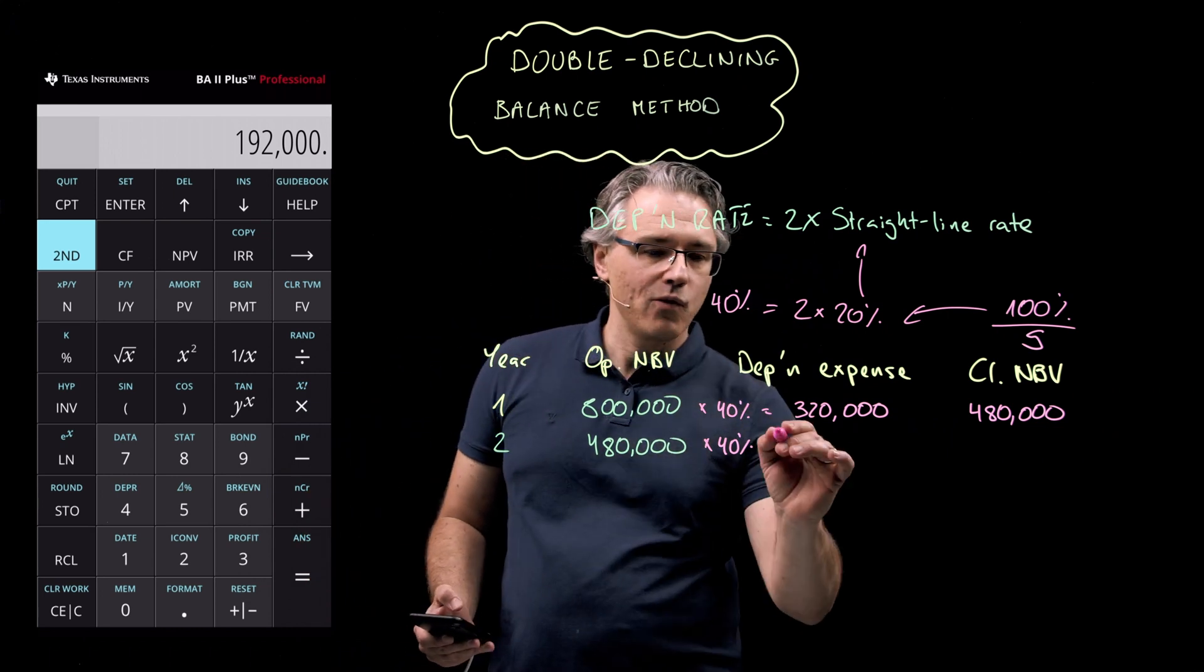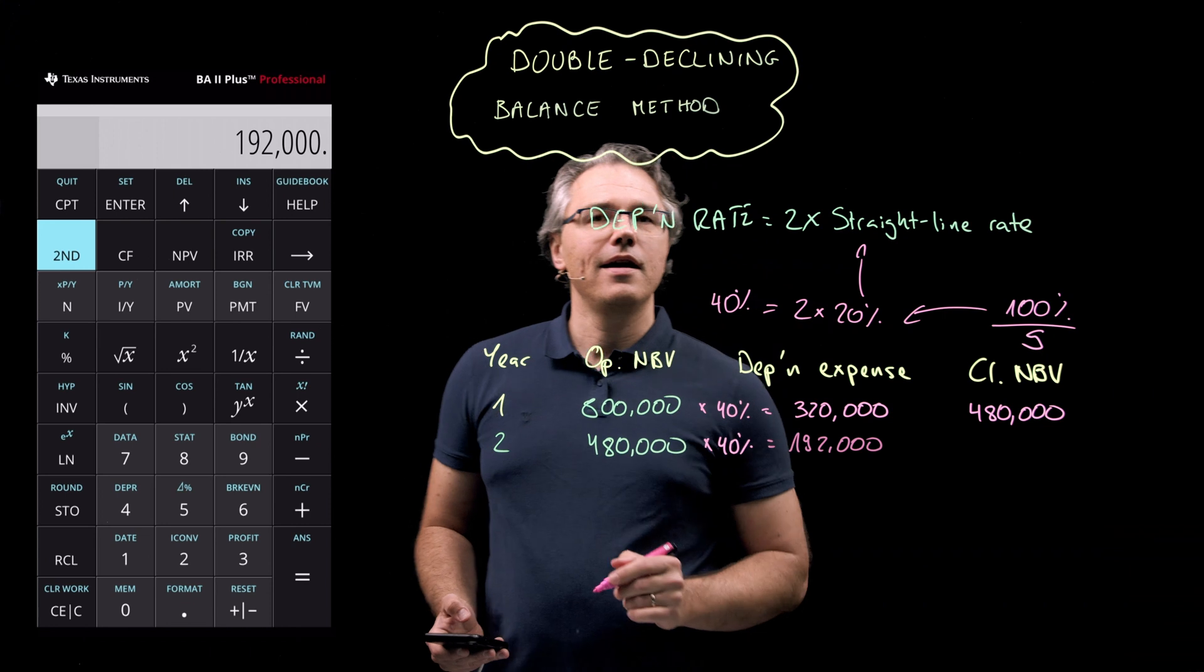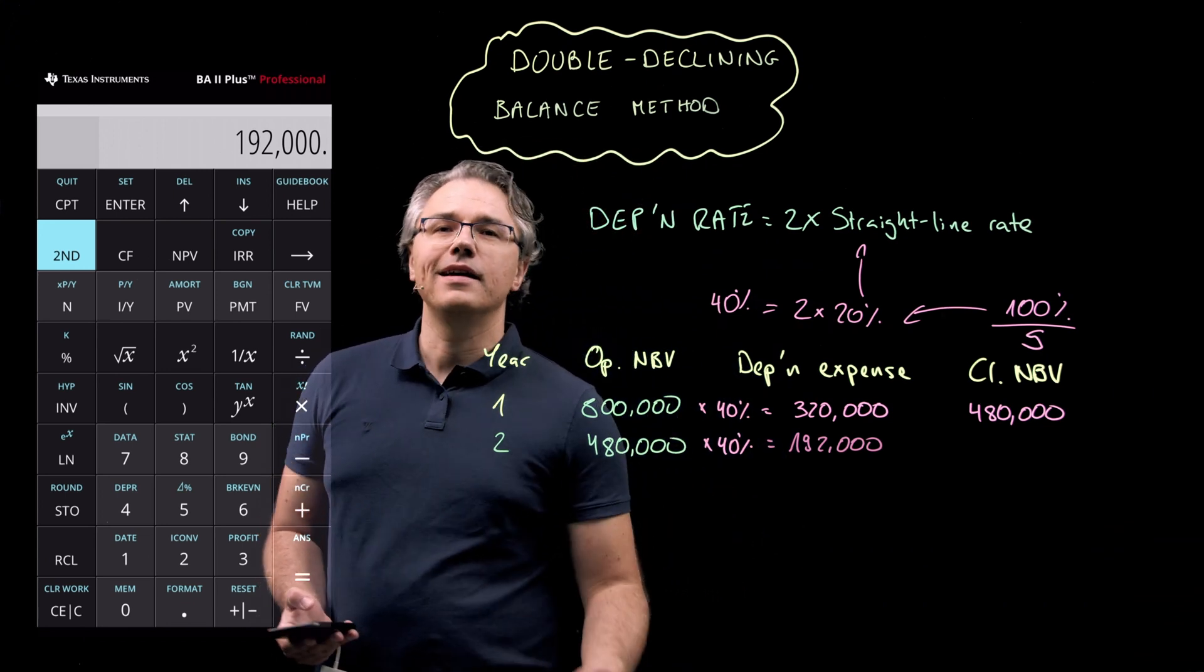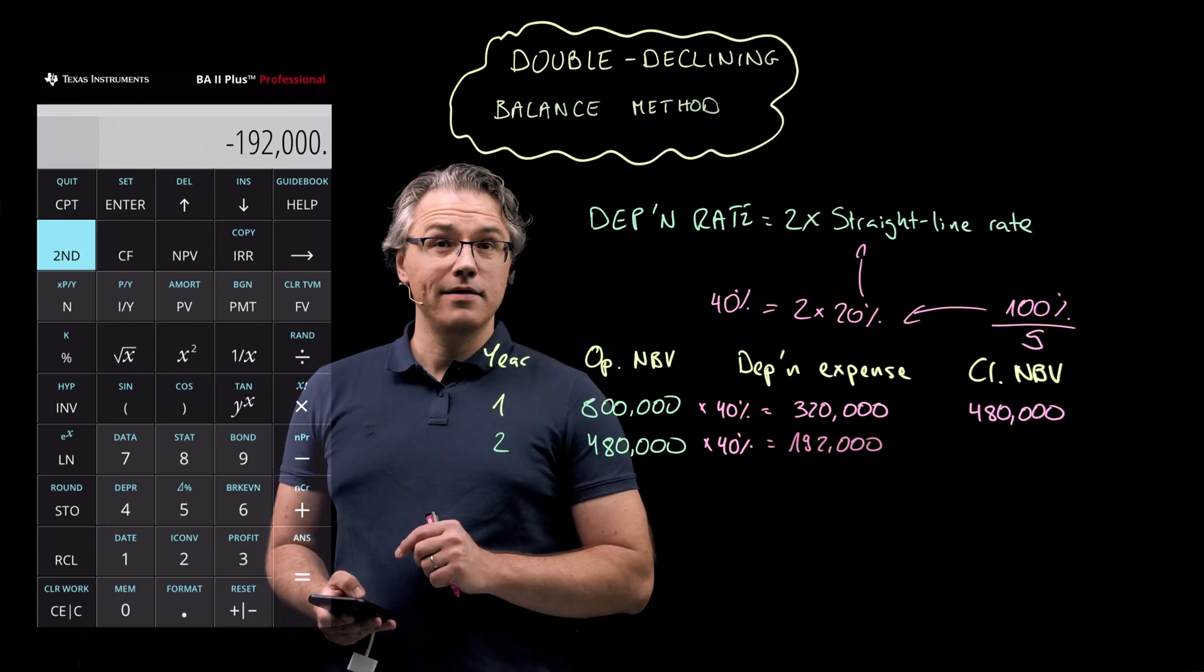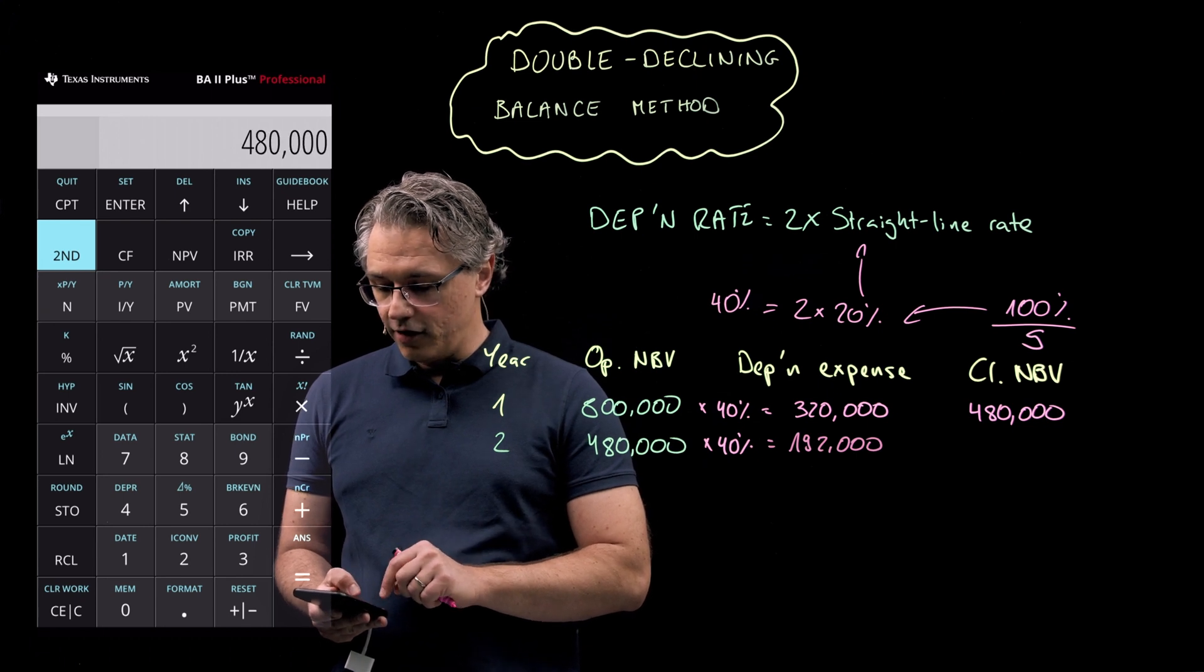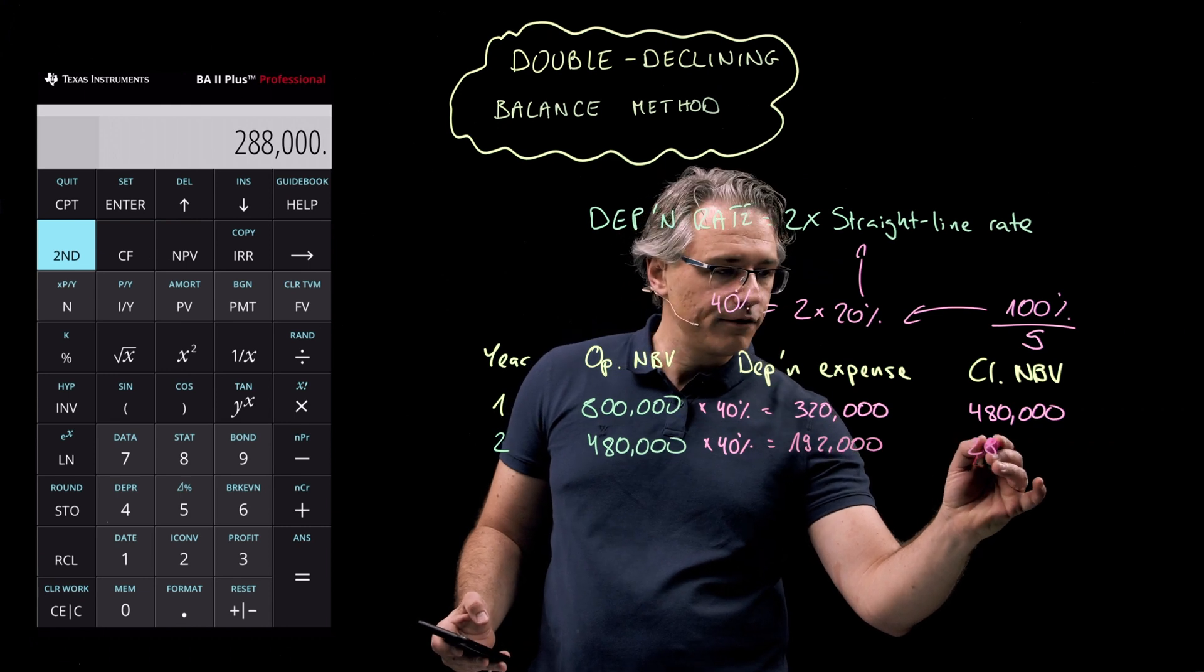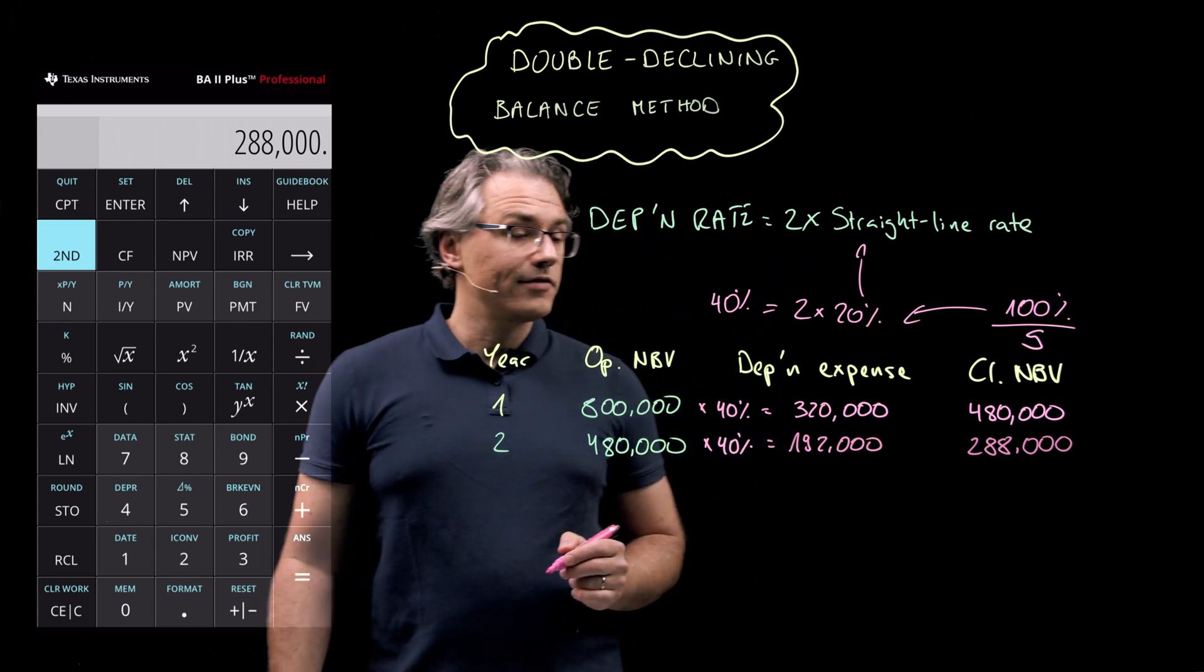The result comes in, as you can see, at 192,000. And let's see what this is going to give in terms of the closing NBV. Put a minus in front of the figure and add 480,000. The opening NBV, as you can see, closing NBV is therefore 288,000.